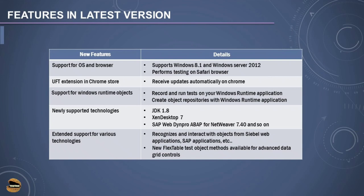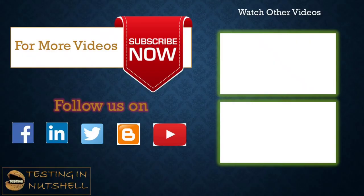New flex table test object methods are available for advanced data grid controls. These are some of the features that ensure UFT meets market demands. With so many features and advantages, the tool remains competitive and people prefer it due to its most important quality: user-friendliness. Going through all the tutorials on this tool, you'll find it more interesting to understand, and there can be a need for UFT at any point of time. That's all from this tutorial — feel free to comment below with any questions. I'm always there to address your queries. Till then, keep learning, keep exploring, keep understanding the context. Thanks for watching and happy learning.